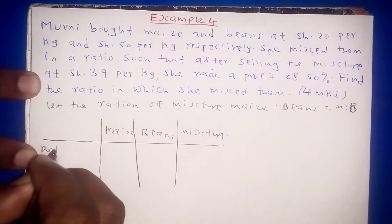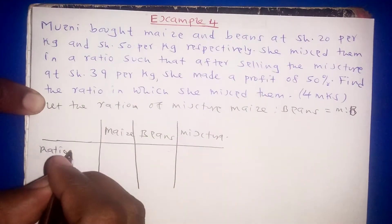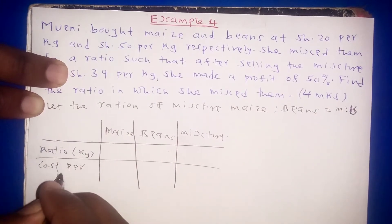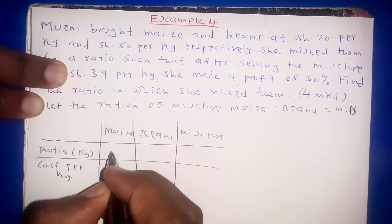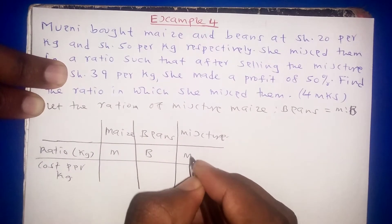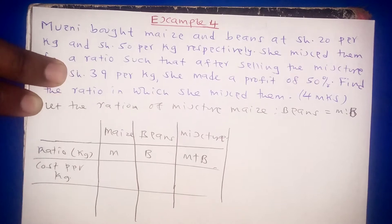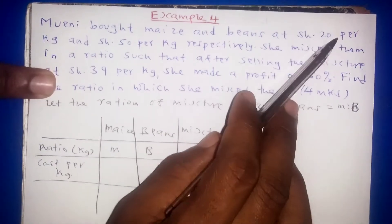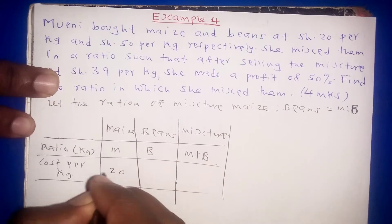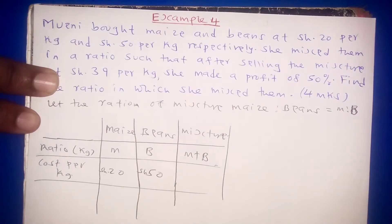The ratio is in kilograms since we are talking per kg. The ratio for maize is M, the ratio for beans is B, so the total ratio for the mixture will be M plus B. For cost per kg, we are given that maize costs 20 shillings per kg and beans costs 50 shillings per kg.